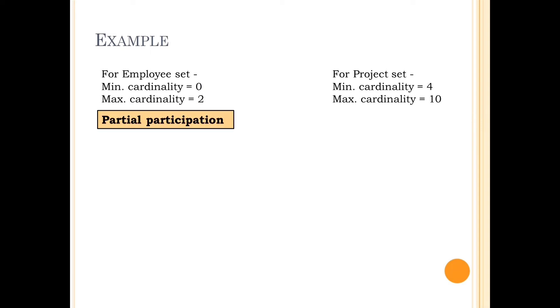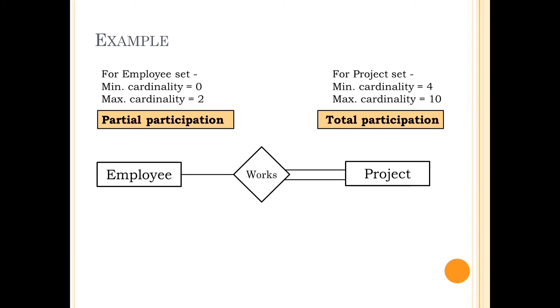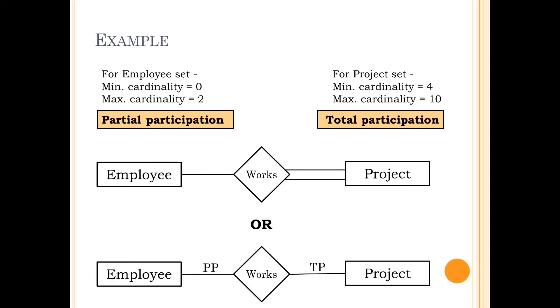Let's take the previous example. The Minimum Cardinality of the employee set is 0, so it has partial participation. Whereas in the project set, Minimum Cardinality is 4, which is greater than 0, so it has total participation. The representation of this relationship is shown on the screen. Sometimes, total and partial participation are denoted by their respective short forms — TP and PP.